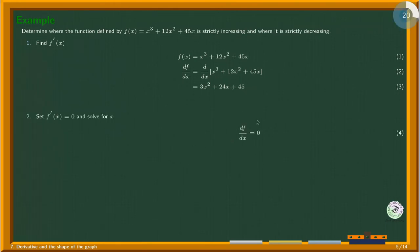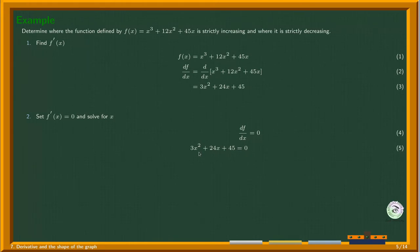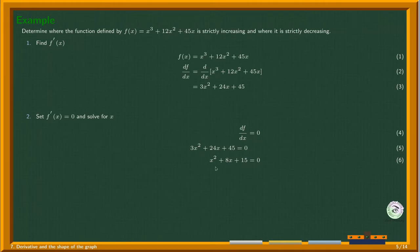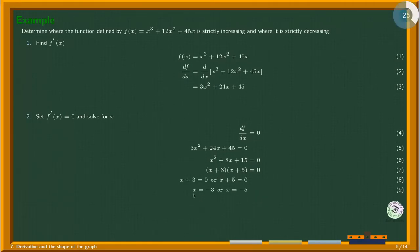Set 3x² + 24x + 45 = 0 and solve for x. Dividing all terms by 3 gives x² + 8x + 15 = 0. This is a quadratic that factors as (x + 3)(x + 5) = 0, giving x = -3 and x = -5.